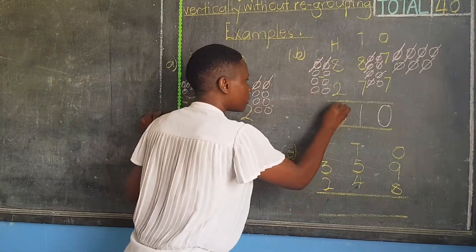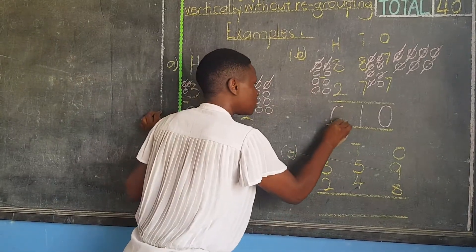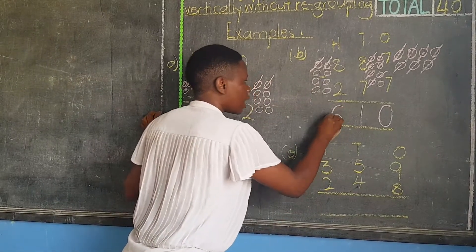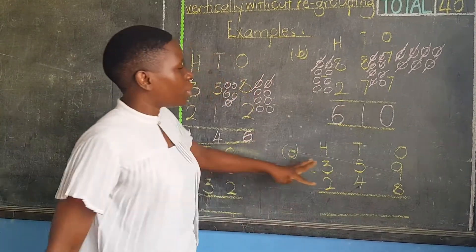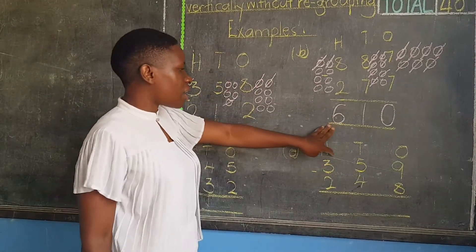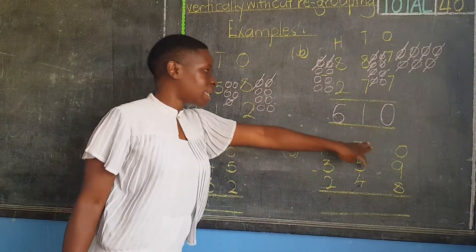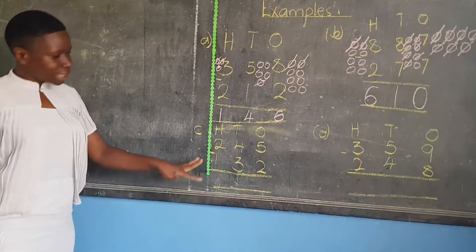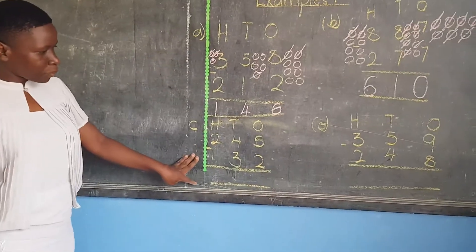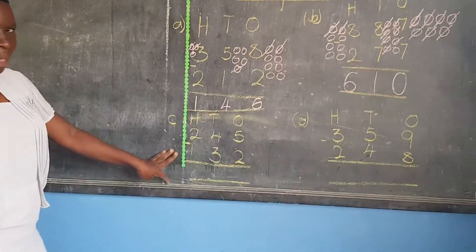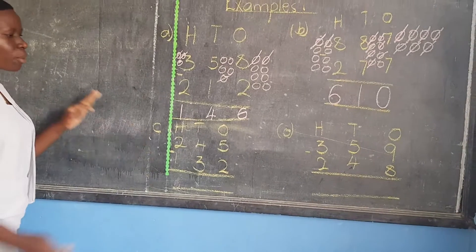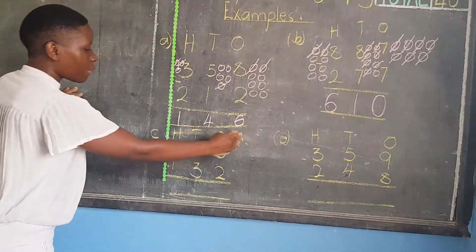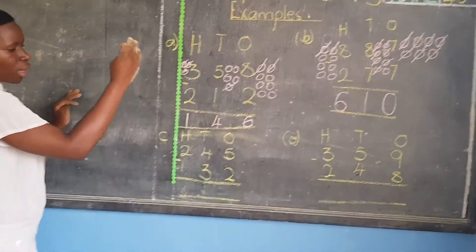So here I am remaining with six. Our answer will be six hundred and ten. Then I come to Part C. Remember, we begin from ones coming to hundreds.